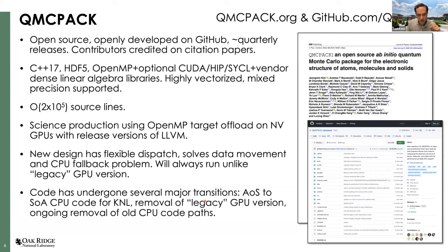As a result of testing and development procedure changes I'll be mentioning, we've been able to go through several major transitions — for example, when Knight's Landing came out, a transition of data structures from array-of-structures to structures-of-arrays. We recently removed the legacy GPU implementation, a 40,000-line reduction in source code. We still have some ongoing cleanup work to reach our goal of primarily one performance-portable code path.